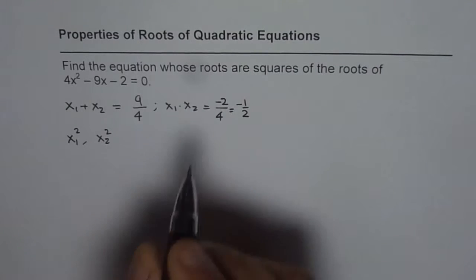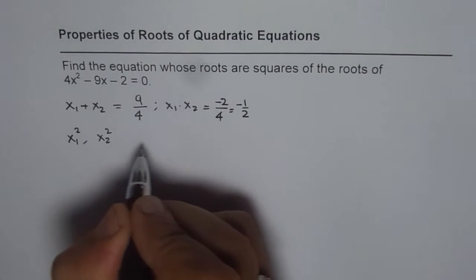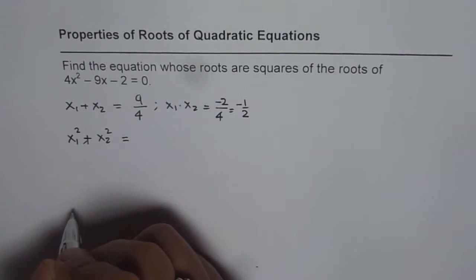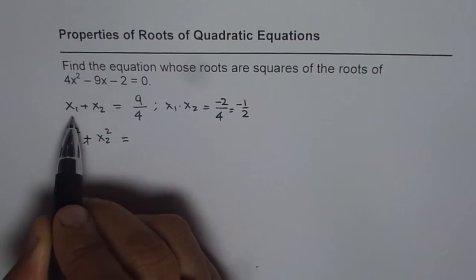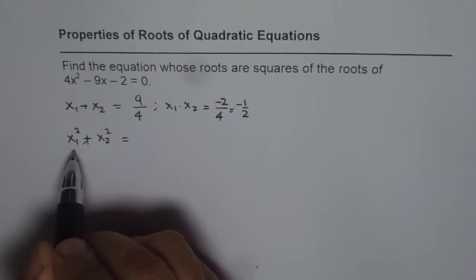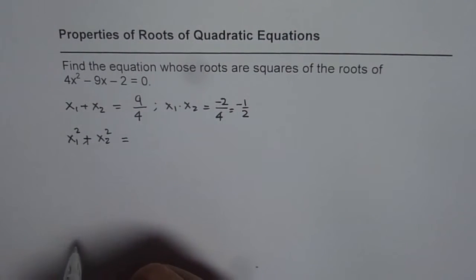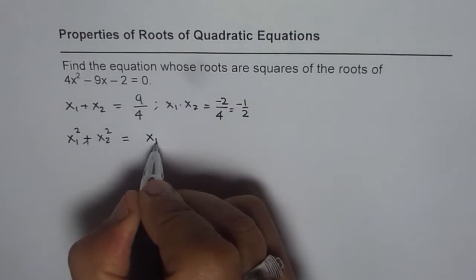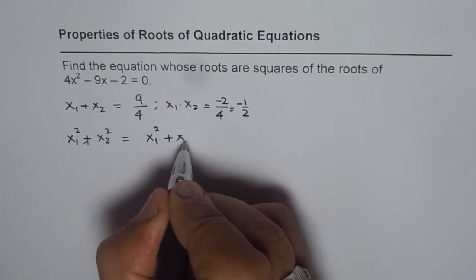How to find their sum? We can add them up. If I add x₁² + x₂², what do I get? We know x₁ + x₂ is 9/4, but how to get x₁² + x₂²? We will apply a technique. That is, we can write this as x₁² + x₂².